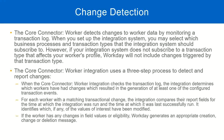For each worker with a matching transactional change, it compares their report fields to see what changes were made — what changes have happened to the report data, what changes have happened to the data for that particular worker. First, it will identify only the workers who had a change, then it will compare each and every field to see what information was changed.